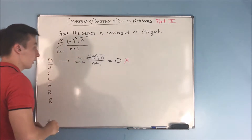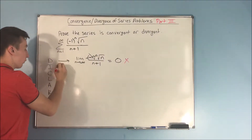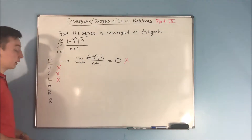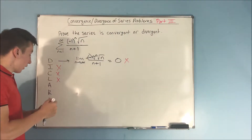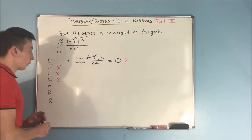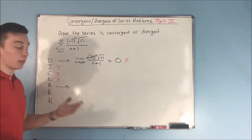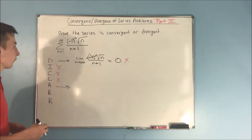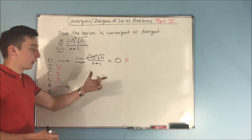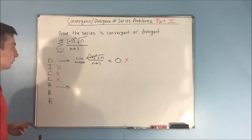So that's going to be a big red x. The integral test is not going to work because you have the negative one to the n. And for the same reasons, comparison and limit comparison will not work as well. Now what we can look for is the alternating series test. This is a perfect example of an alternating series test problem because you have that negative one to the n there. And we already proved that the limit was equal to zero with the test for divergence.